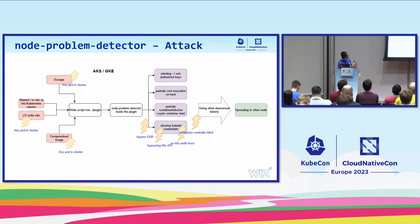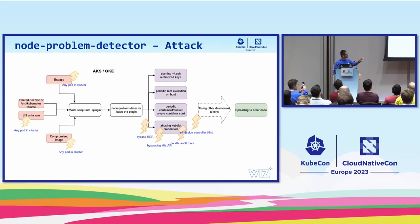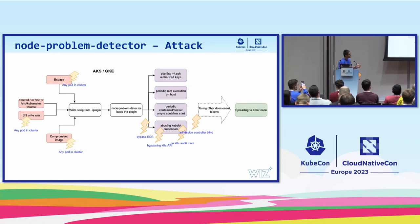Let's analyze what we had here. We started with container escape — but we don't even need that. We can exploit a misconfiguration and file-writing ability of the pod. This can happen in any pod in the cluster because node problem detector runs on every worker node like a daemon set. We write a script, node problem detector immediately picks up the plugin, and then we have periodic execution as root to do nasty stuff — establishing persistence, spreading to other nodes through usage of tokens. Importantly, all this happens under the radar of the API server — no audit trace, admission controller is blind, and we probably bypass EDR because node problem detector is known to EDR solutions.